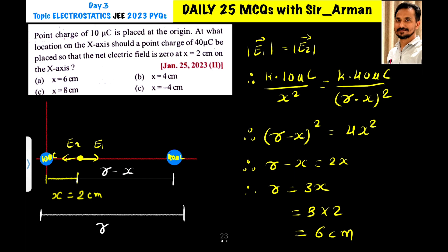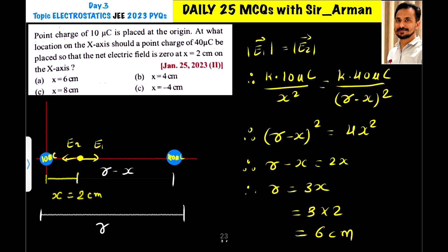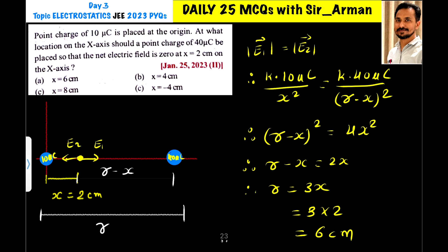We need to find at what distance from the origin the 40 microcoulomb charge should be placed. Let us assume we place this 40 microcoulomb charge at distance r from the origin, and let us call the point at distance x, where x equals 2 centimeters.